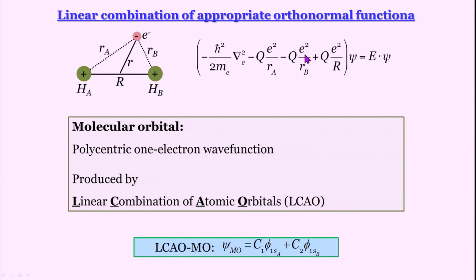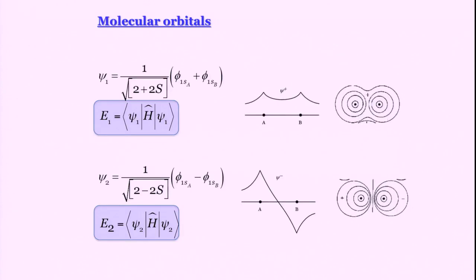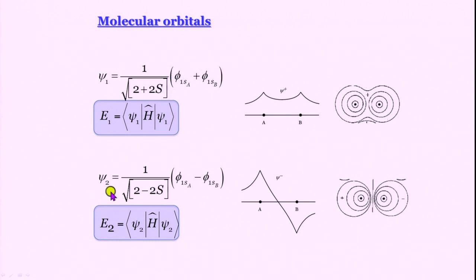We formulated the Schrödinger equation and said we are going to construct the molecular orbital not by solving it directly, but by a unique technique: taking a linear combination of atomic orbitals (LCAO). We identified an overlap integral — integral of 1s_a times 1s_b over all space — and obtained two wave functions: psi_1, the bonding orbital, is 1 over root(2 + 2S) times (1s_a + 1s_b), and psi_2 is 1 over root(2 - 2S) times (1s_a - 1s_b).